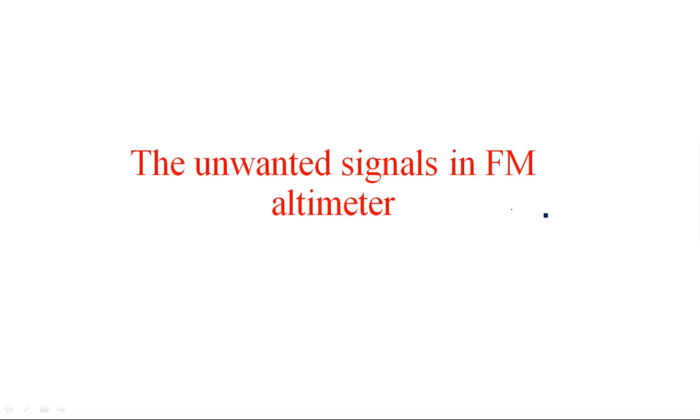In this video I am going to explain about the unwanted signals present in the FMCW altimeter. Before going into that, I want to recollect what we mean by FM altimeter. An FM altimeter is used to calculate the height from the earth's surface — FMCW, or simply FM altimeter, is used to find the height from the earth's surface.